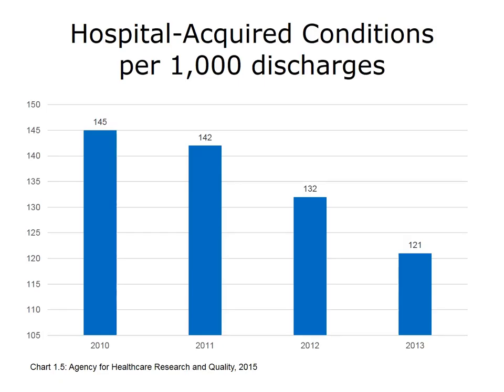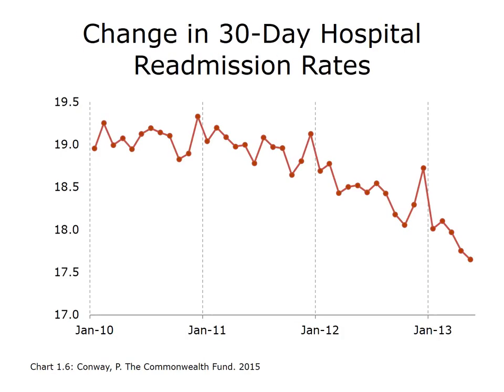One area of success has to do with rates of hospital-acquired conditions — adverse events such as infections acquired in the hospital. As this graph highlights, rates of hospital-acquired conditions decreased between 2010 and 2013. Additionally, new payment and organizational reforms likely contributed to reductions in all-cause 30-day hospital readmission rates, a key concern among policymakers who targeted or penalized institutions with excessive repeat readmissions.